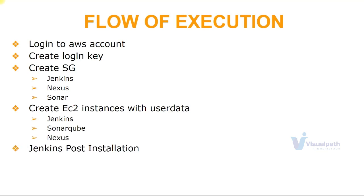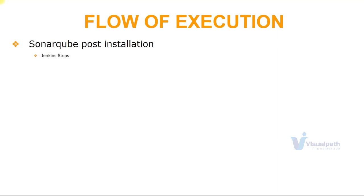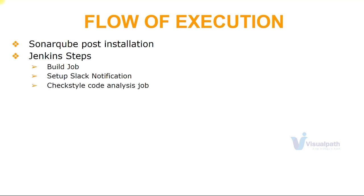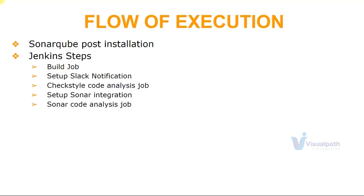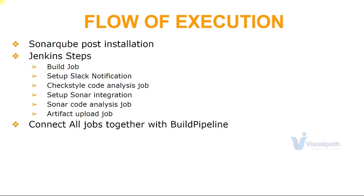After that, we'll conduct some Jenkins post-installation and install some plugins. Once Jenkins is ready, we'll set up the Nexus repository — we're going to set up three repositories in Nexus for Maven. We'll do some SonarQube post-installation steps. In Jenkins, we're going to create multiple jobs: first a build job, then we're going to set up Slack notification. Once we integrate Jenkins with the Slack channel, we'll test this. Then we'll create another job — a CheckStyle code analysis job. Then we'll integrate Jenkins with the SonarQube server. A SonarQube scanner job will be created. If all this is successful, we will upload our artifact to the Nexus repository. Finally, we'll integrate all these jobs together with a build pipeline and set an automatic build trigger, so if there is any code change, Jenkins will detect that automatically and the entire process will run.